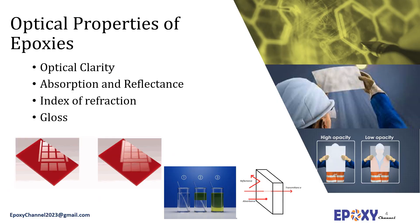Optical properties such as light transmission at various wavelengths are important considerations when choosing epoxies. Various grades of epoxy systems offer different light transmission properties. Both one and two-part epoxies vary in color from transparent to opaque. You can see an opaque sheet with a more transparent sheet in this image. Some applications require a transparent product; for others, amber or clear is acceptable as long as light transmission is good. Sometimes opaque systems are acceptable.